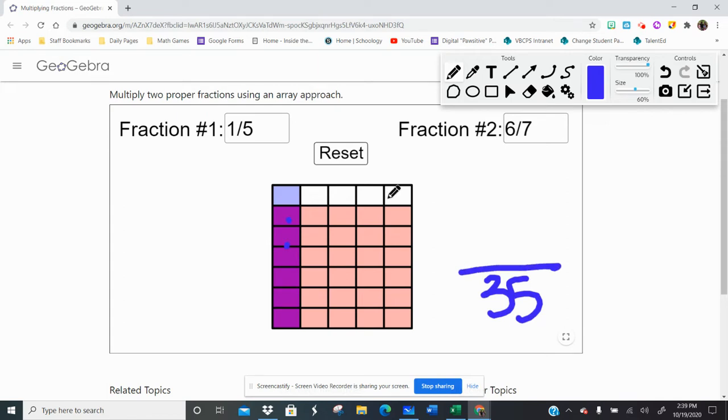And then one, two, three, four, five, six are double colored. I kind of created that new color with those. So again, you're looking at rows times columns to figure it out.